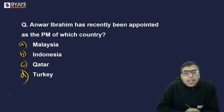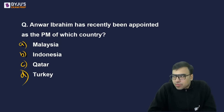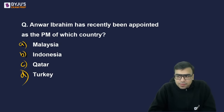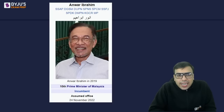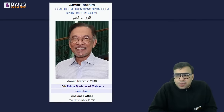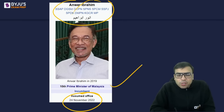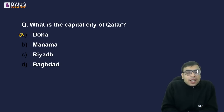Ibrahim Anwar Ibrahim has recently been appointed as the Prime Minister of which country? Options: Malaysia, Indonesia, Qatar, or Turkey. The right answer is A — Malaysia. Anwar Ibrahim took the oath of office as Prime Minister of Malaysia on 24th November.